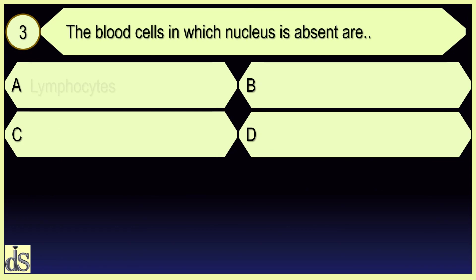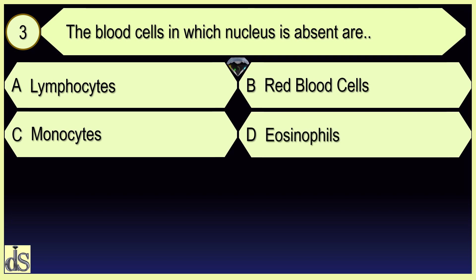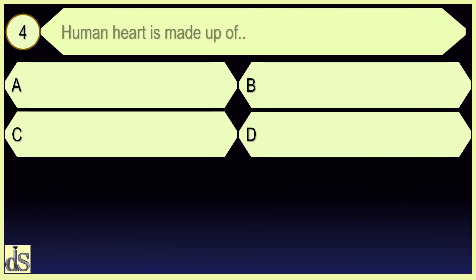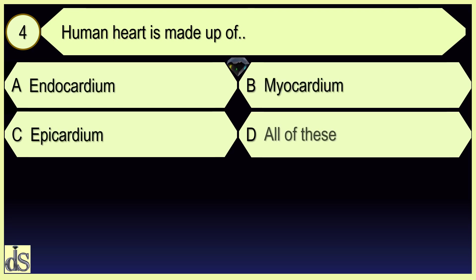The blood cells in which nucleus is absent are red blood cells. Human heart is made up of all of these.